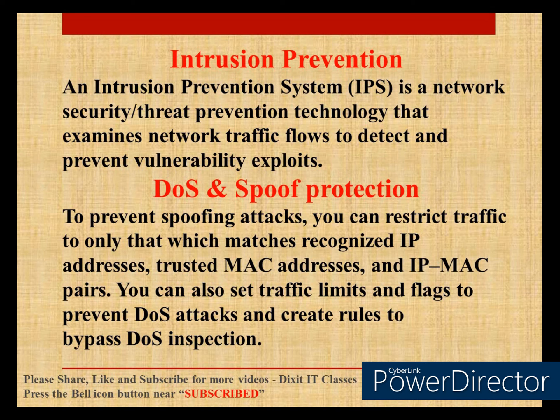The recognized MAC addresses and IP addresses in your environment — by creating pairs of those, the firewall protects and forwards recognized traffic. If something different comes in, it drops it or takes whatever action you have configured. You can also set traffic limits and flags to prevent DOS attacks, and create rules to bypass DOS inspection.